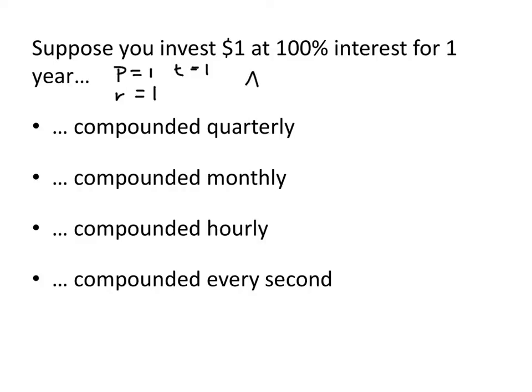And it's only the n that's going to change. So that means that our amount is going to work out to be 1 times 1 plus 1 over n raised to the n. Or in other words, just 1 plus 1 over n to the n.